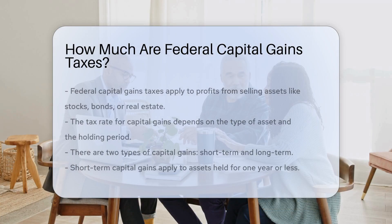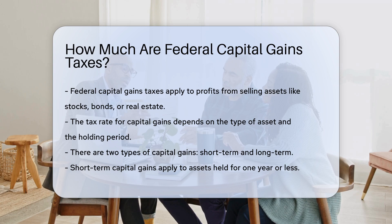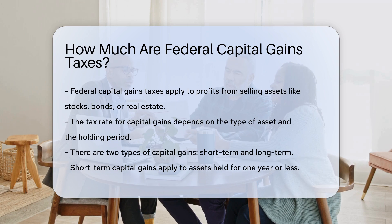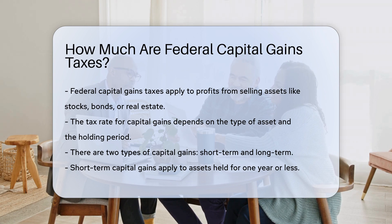Understanding federal capital gains taxes is crucial for any investor. Capital gains taxes apply to the profit made from selling assets like stocks, bonds, or real estate. The tax rate depends on the type of asset and how long it was held. There are two main types of capital gains: short-term and long-term.